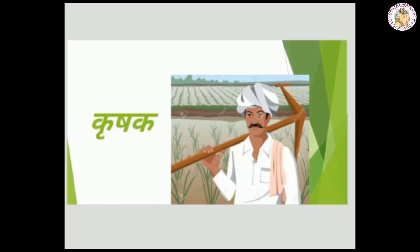Next word is krishak. Ka plus re-matra kri. Sh-ka. Krishak. Krishak means farmer.